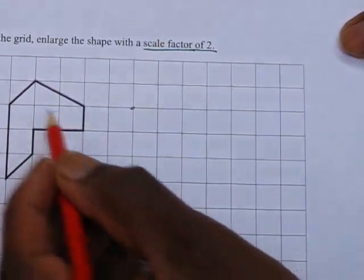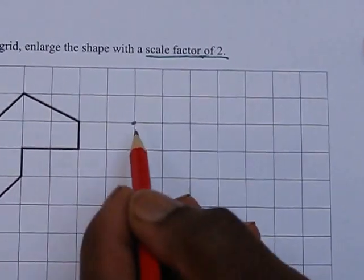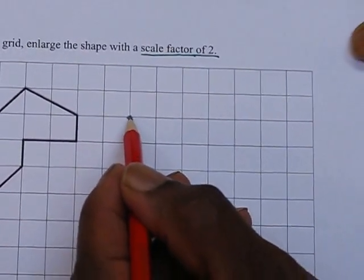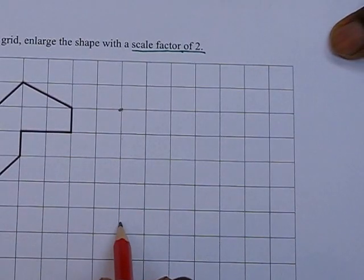You'll notice that this length here, 1, 2, 3. So my new length will be twice as long, 1, 2, 3, 4, 5, 6.